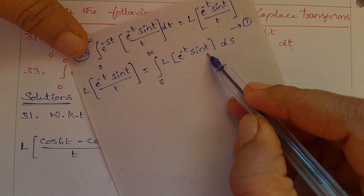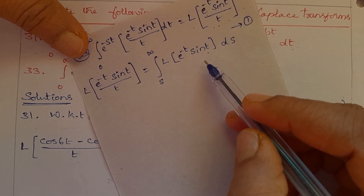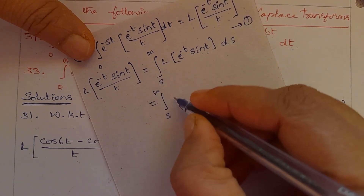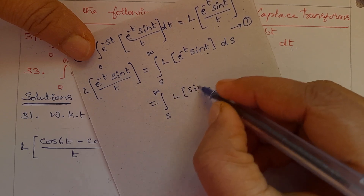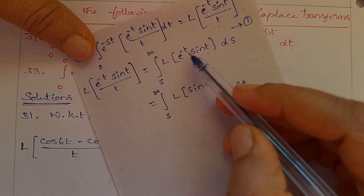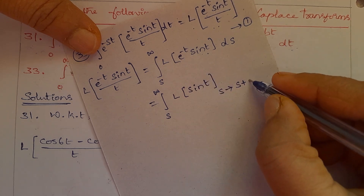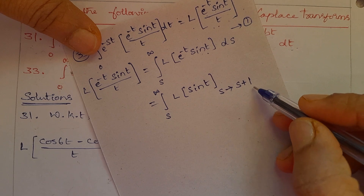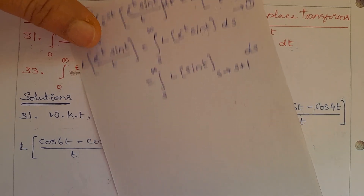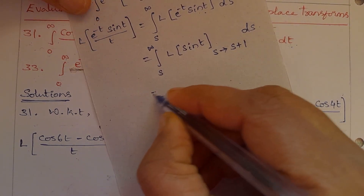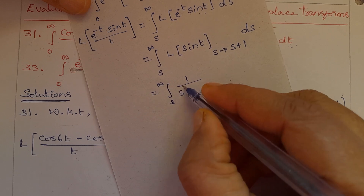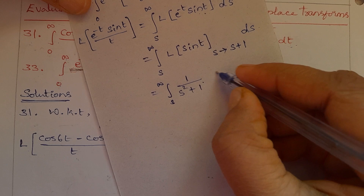For the Laplace Transform of e^(-t) sin(t), apply the first shifting property of Laplace Transforms. So we get the integral from s to infinity of the Laplace Transform of sin(t), with s replaced by s+1 (since a = -1, so s tends to s plus 1), ds. The Laplace Transform of sin(t) is 1 divided by s² + 1.